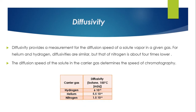Diffusivity provides a measurement for the diffusion speed of a solute vapor in a given gas. For helium and hydrogen, diffusivities are similar, but that of nitrogen is about 4 times lower. The diffusion speed of the solute in the carrier gas determines the speed of chromatography.